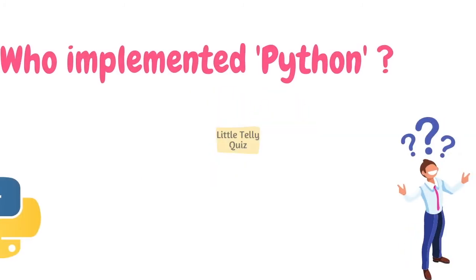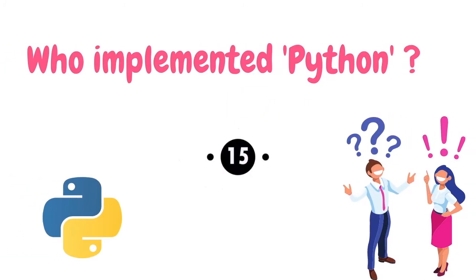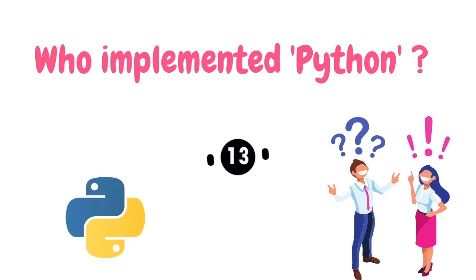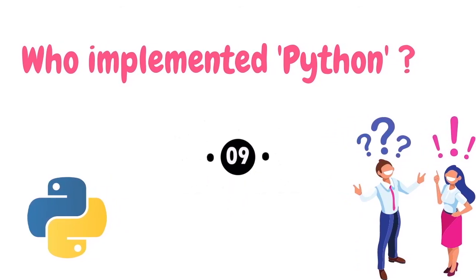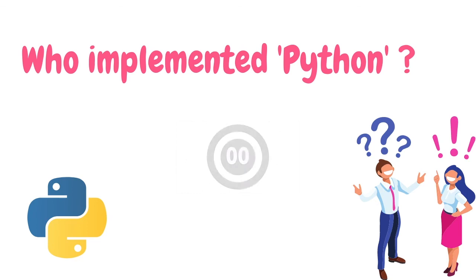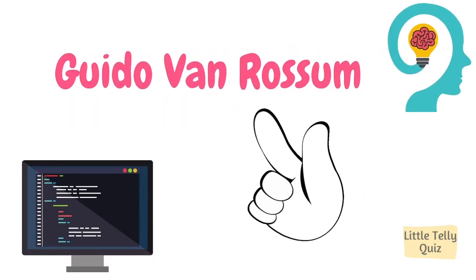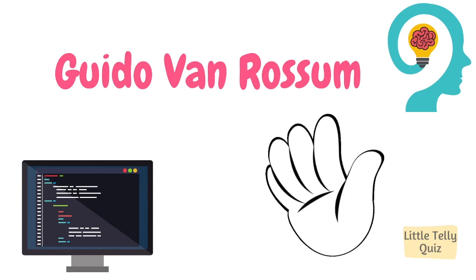Who implemented Python? The answer is Guido van Rossum.